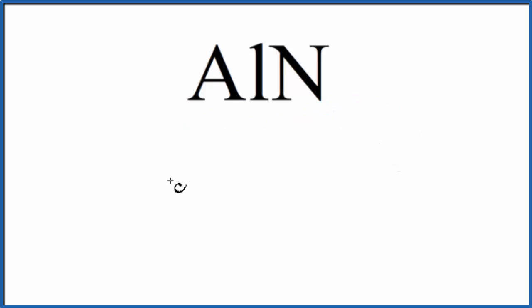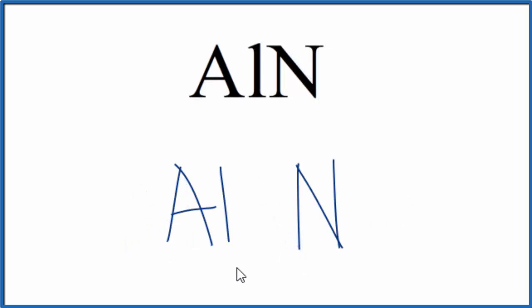So first let's write Al for aluminum and then N for nitrogen. Aluminum, that's a metal. Nitrogen is a non-metal. So we're going to consider this an ionic compound.